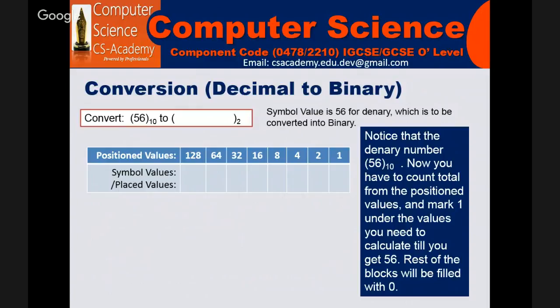This will help you calculate the decimal value equivalent to binary. Notice that the binary number 56 base 10—you have to count total from the position values and mark 1 under the values you need to calculate till you get 56. You have to add the values under which you have marked 1. The rest of the blocks will be filled with 0.